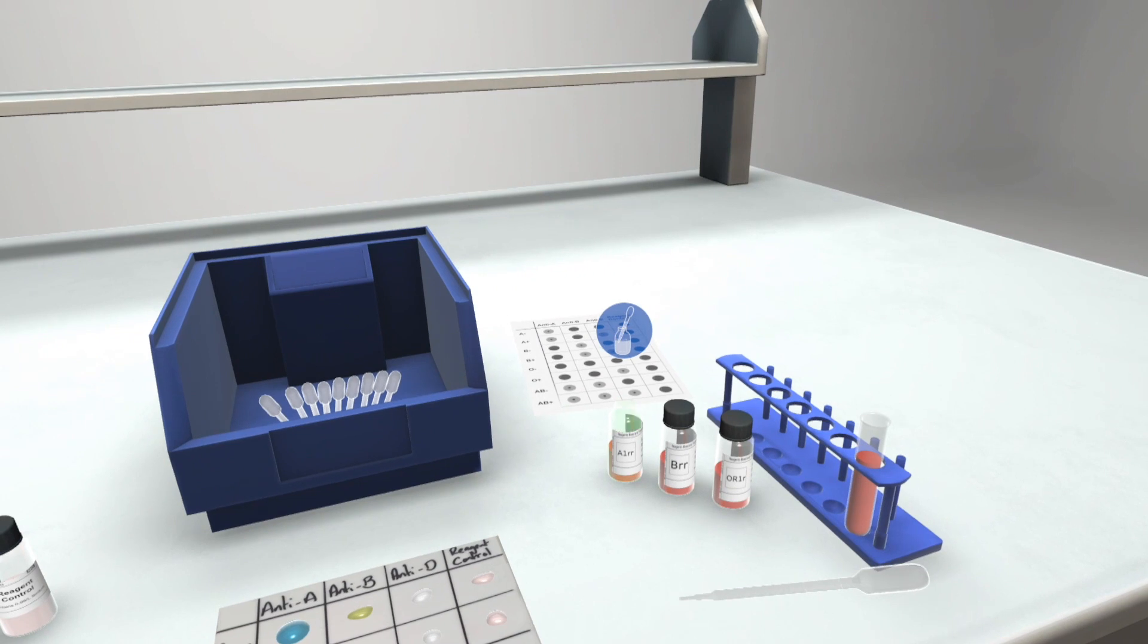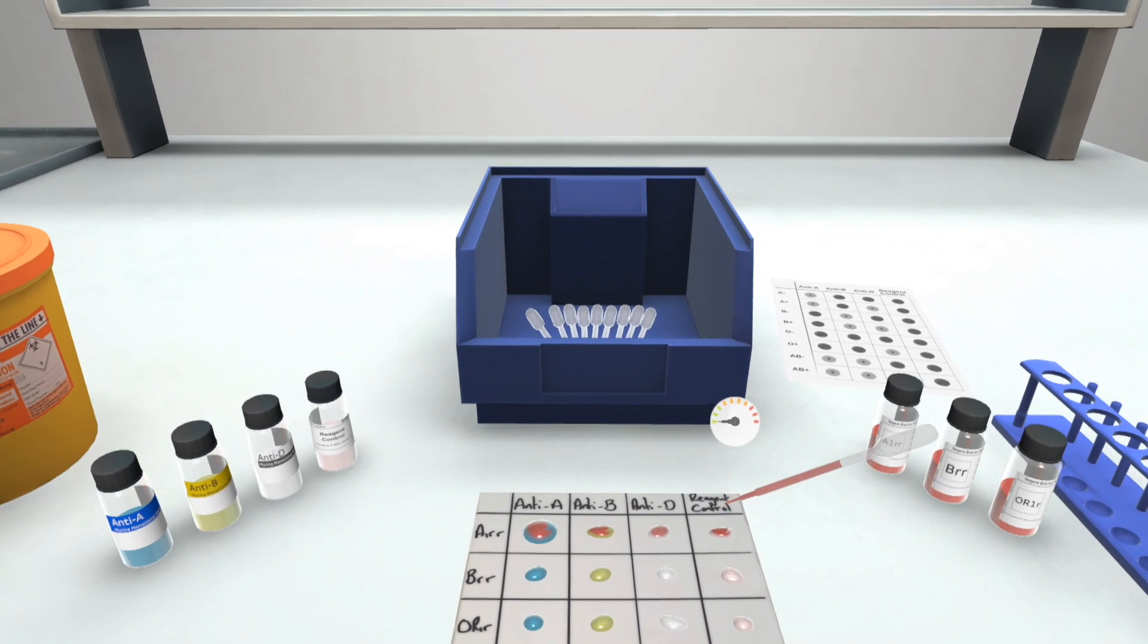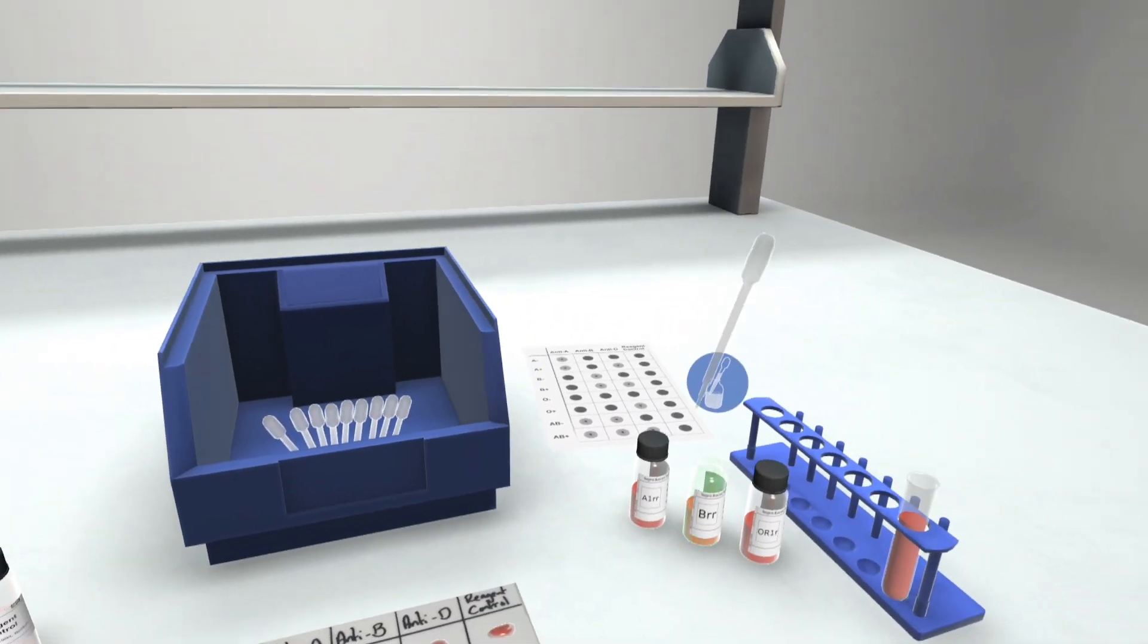When performing this process in real life, you'll need to mix the RBCs by gently rolling the bottles between the palms of your hands. However, we'll assume this has already happened.